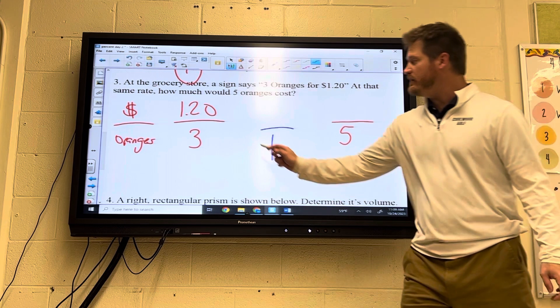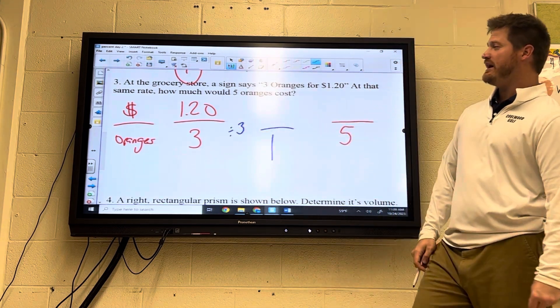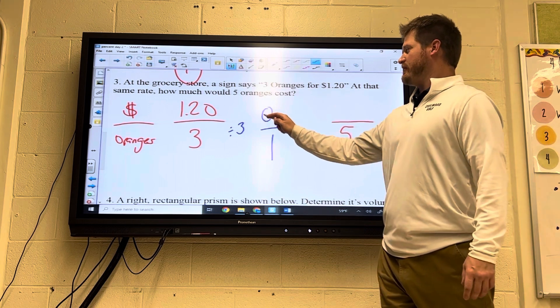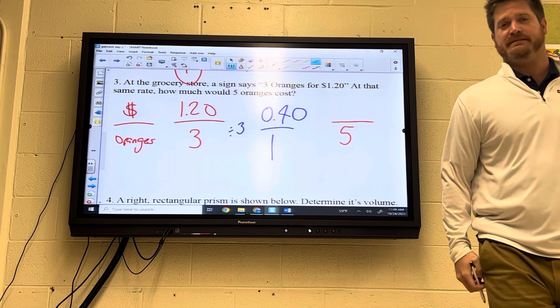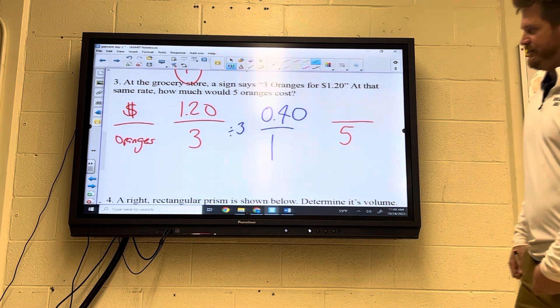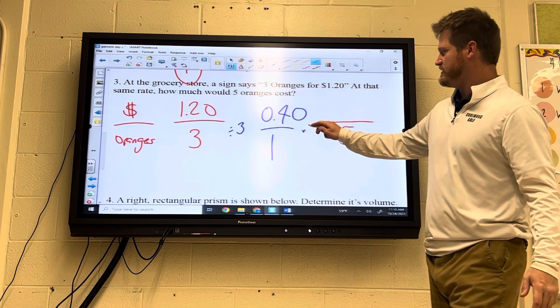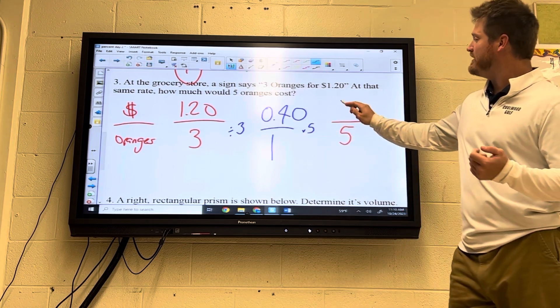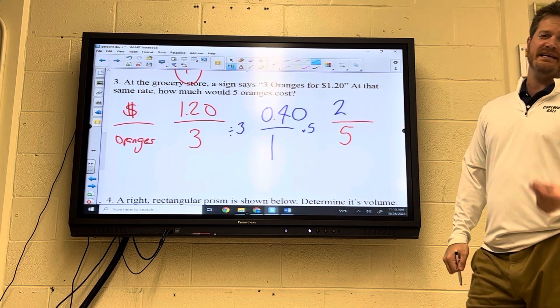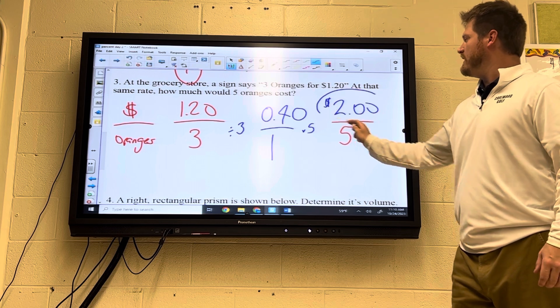So getting it down to one, three to one, we've got to divide by three. What I do at the top is at the bottom. And $1.20 divided by three, your calculator says this number. But we know that 0.4 is really equal to 40 cents. Now to go back up to five, you could add it five times, but that's a waste of time. Because we could also just multiply it by five. And 0.40 times five gives me two. And since it is dealing with money, our answer would look like this. Two dollars.